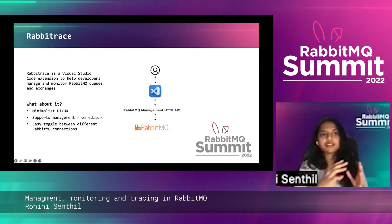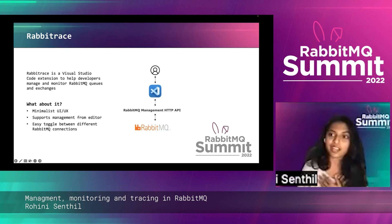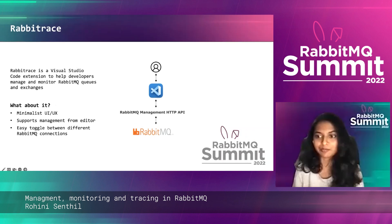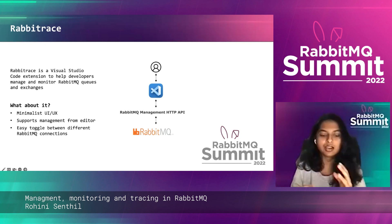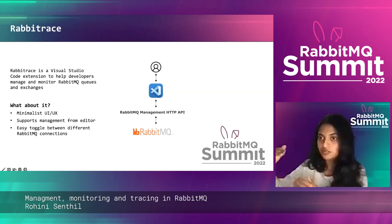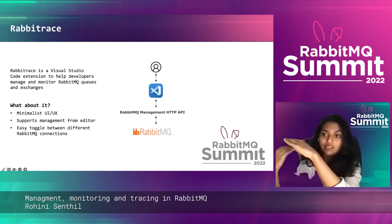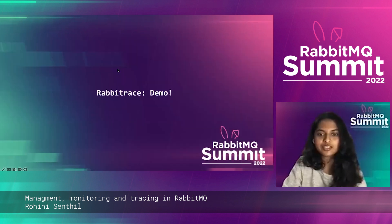Now let's look at the wrapper around these HTTP APIs. This is something called RabbitRace — a Visual Studio Code extension I built for helping developers manage and monitor their RabbitMQ queues and exchanges right from the editor, without having to switch to a browser. It has a minimalist UI/UX that's easy to understand, supports easy toggling between multiple connections, and is built on top of the same HTTP APIs communicating with your RabbitMQ nodes.